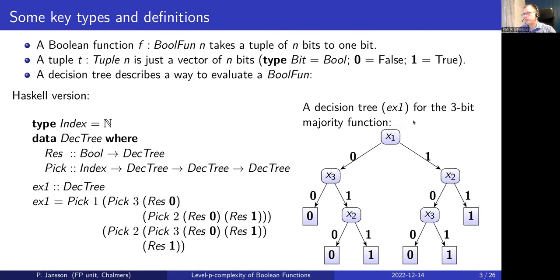Looking at the right-hand side of the slide where the decision tree is graphically depicted: one way of evaluating the three-bit majority function — which checks which of zero or one is in the majority — is to look at the first bit. If it's zero, you check the third bit; if that's also zero, you're done — the result is zero regardless of bit two, since you already have two zeros. The leaves give the output of the boolean function, and the paths down the tree show what questions you ask, one bit at a time.